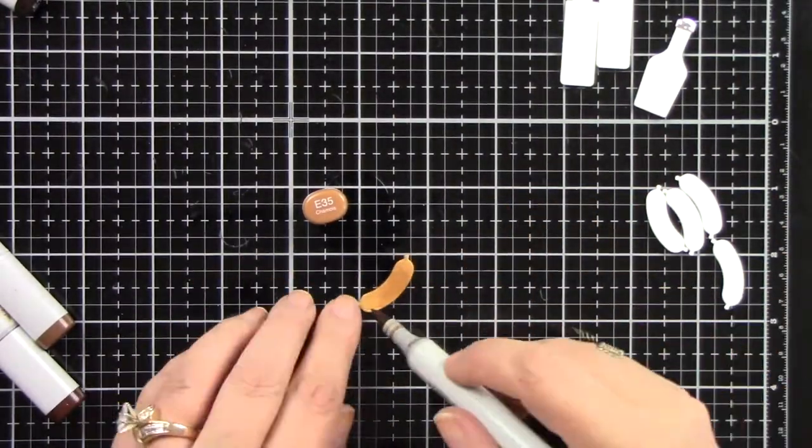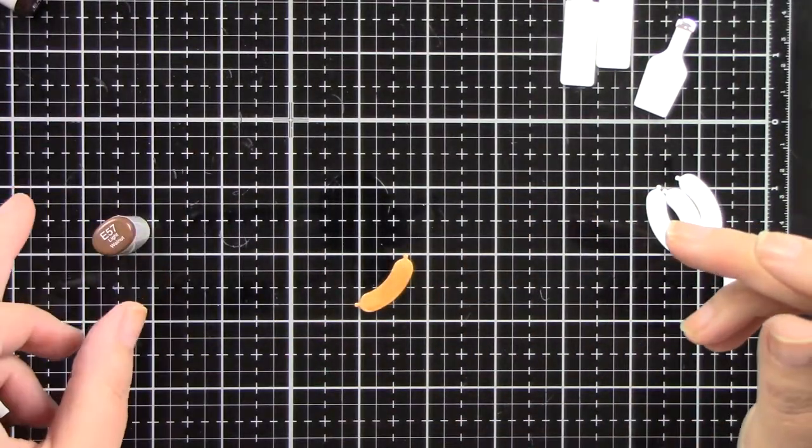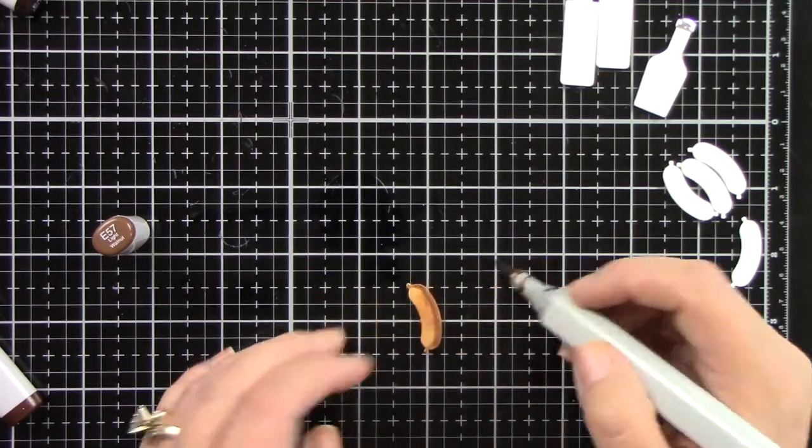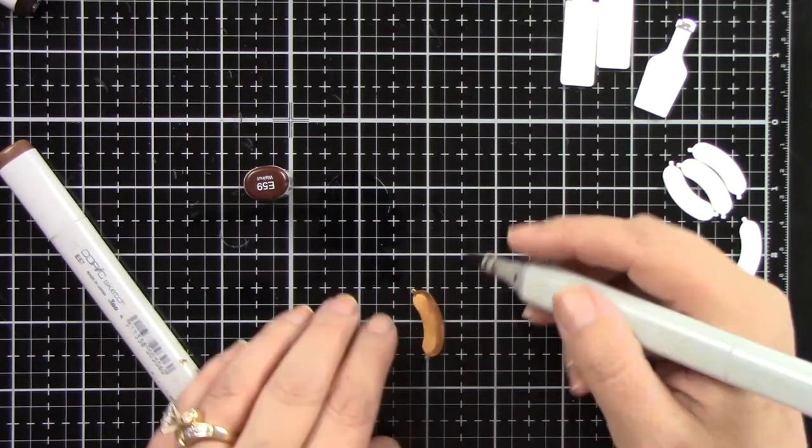Now I have die cut a bunch of the cute little sausages and I'm going to color those with Copic markers. I'm using E55, 35, 29, 49, 57, and 59.